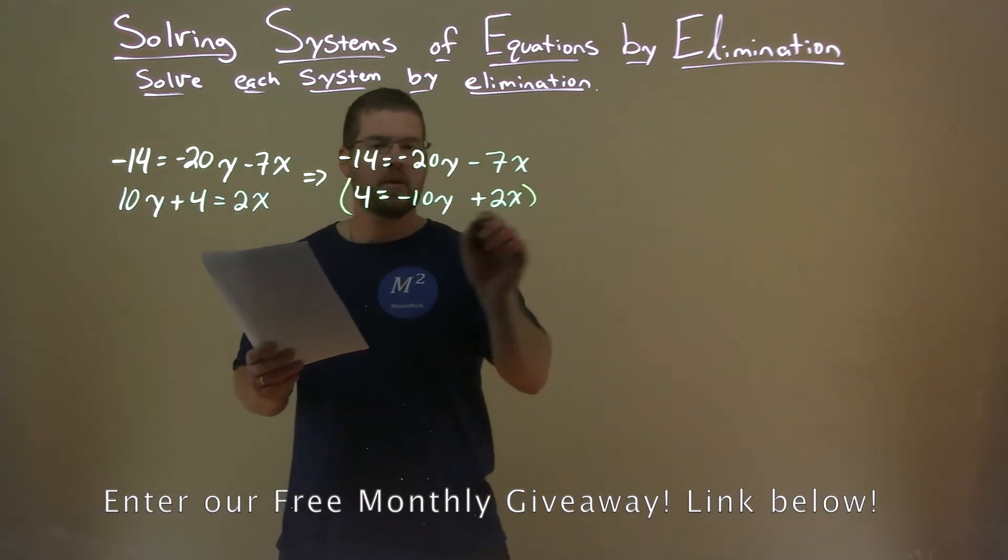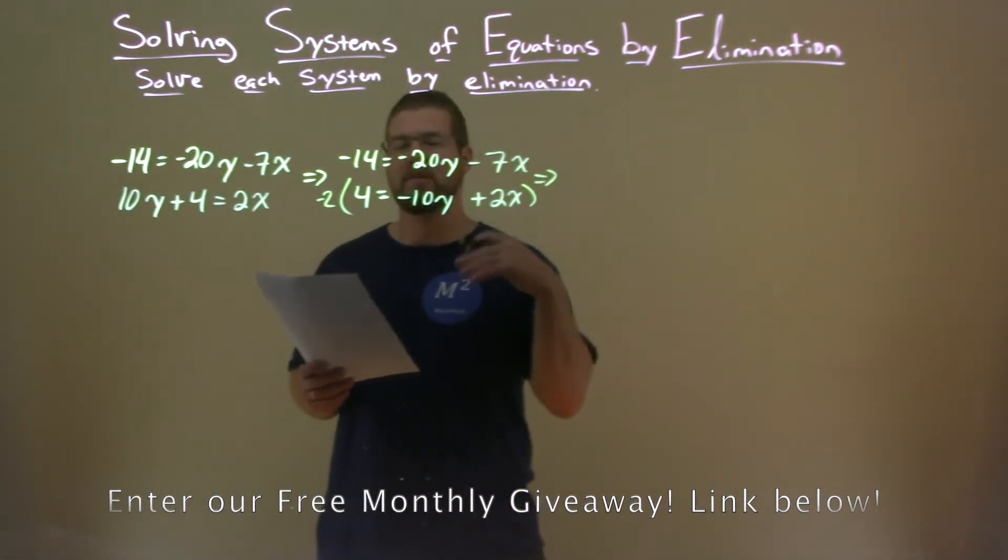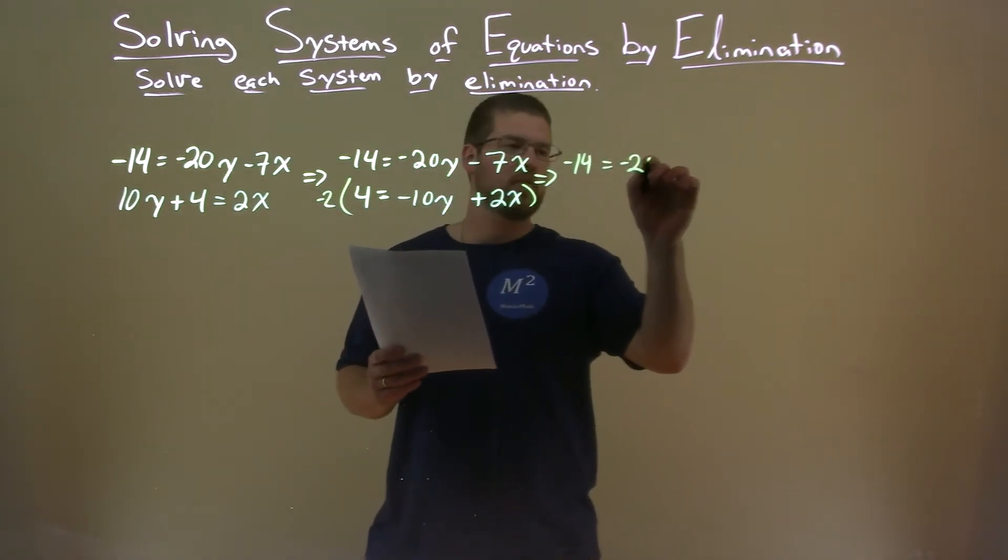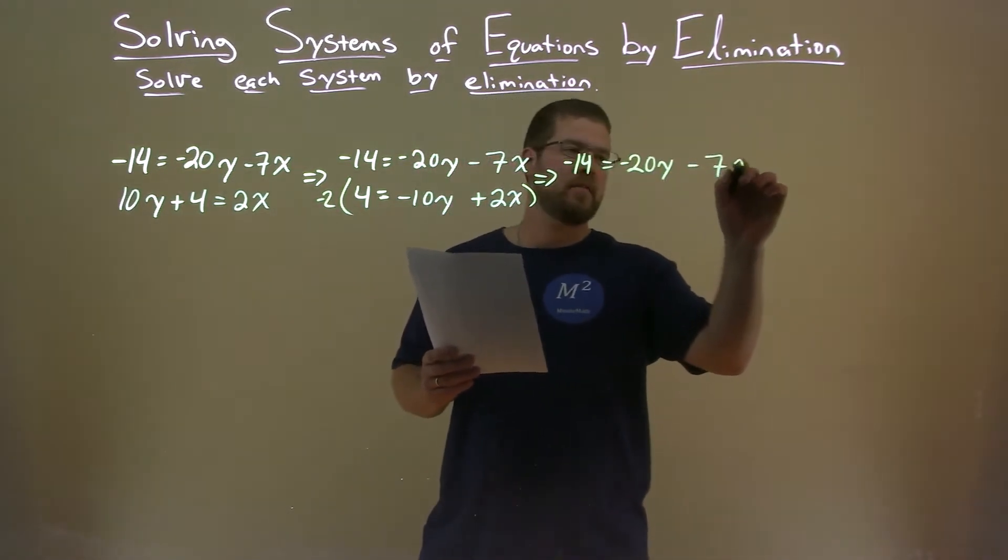Let's take the second equation and multiply it by a negative 2. The top equation, again, stays the same. Minus 14 equals a negative 20y minus 7x.